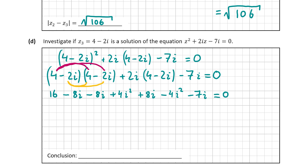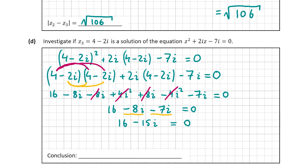Now some terms cancel: plus 4i squared cancels with minus 4i squared, and one of the minus 8i's cancels with plus 8i. We're left with 16 minus 8i minus 7i. Combining the like terms: minus 8i minus 7i is minus 15i. So that gives us 16 minus 15i equals zero. However, 16 minus 15i is not equal to zero, so z3 is not a solution of the equation.